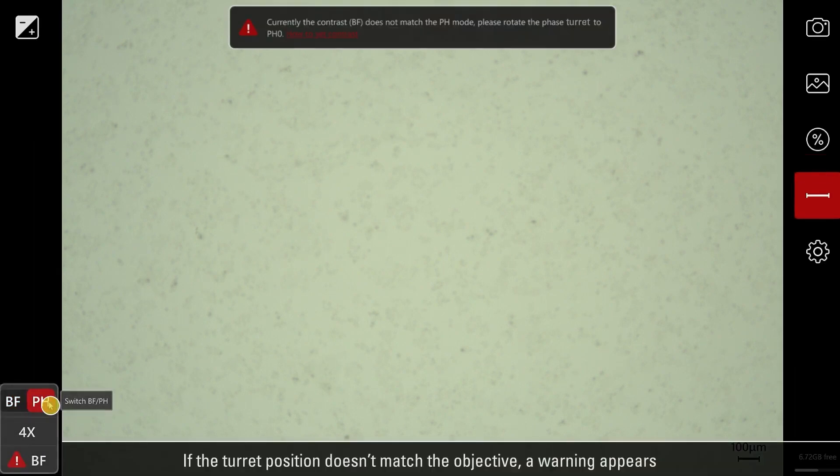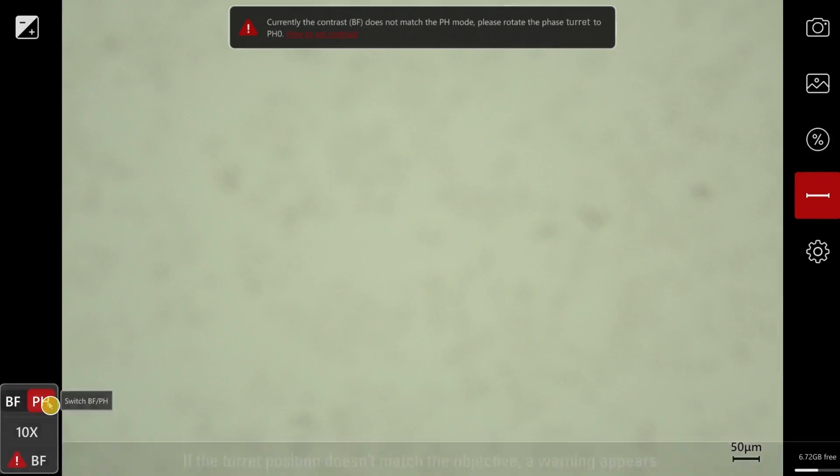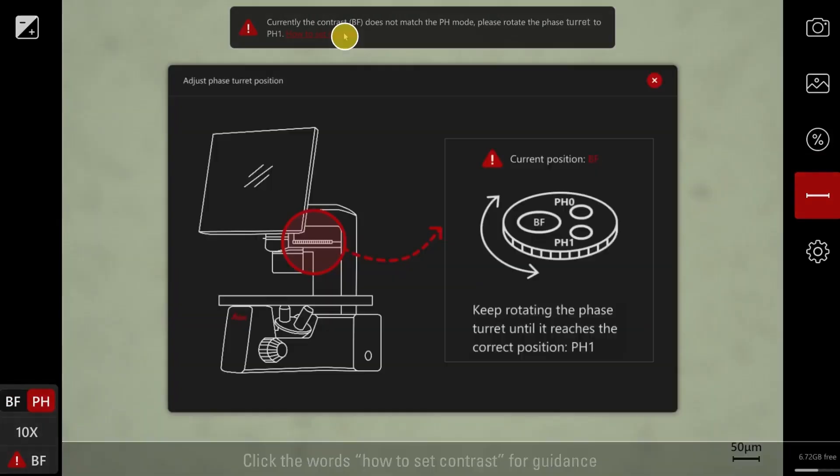If the turret position doesn't match the objective, a warning appears. Click the words 'How to set contrast' for guidance.